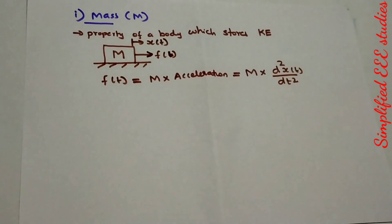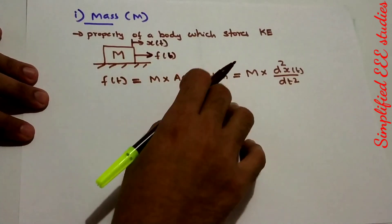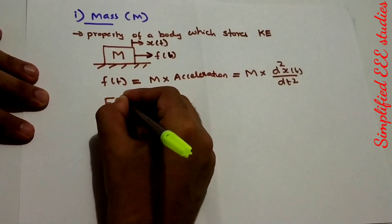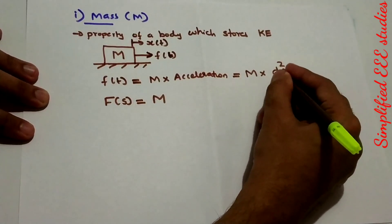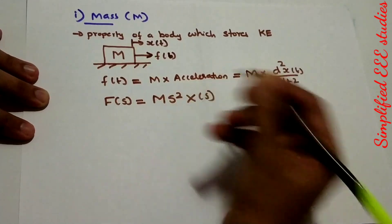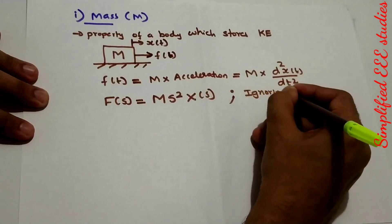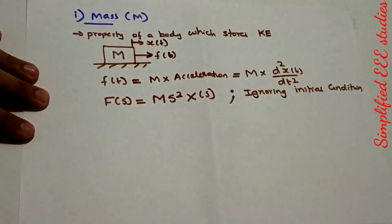Neglecting the initial condition, if you want to ignore initial conditions you can use the Laplace transform. Converting everything into the S domain: F(t) becomes F(s), which equals M — a constant — times s²·X(s), where s² is the Laplace transform of d²X(t)/dt², ignoring initial conditions.